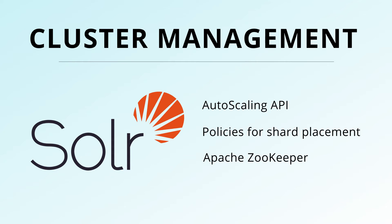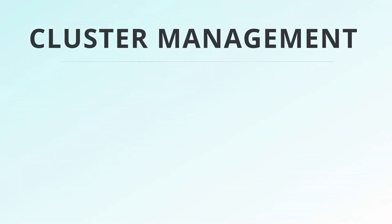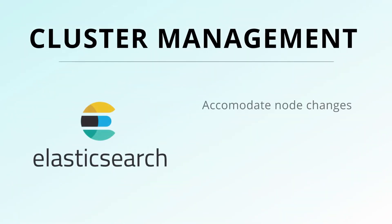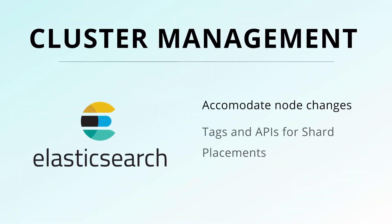Solr also uses concurrent Apache Zookeeper instances to store configuration files and monitor the status of nodes in a cluster. Elasticsearch is more dynamic with node discovery and cluster management. Shards are automatically moved to accommodate new or deleted nodes, and you can set tags to control shard placement and move them using APIs.